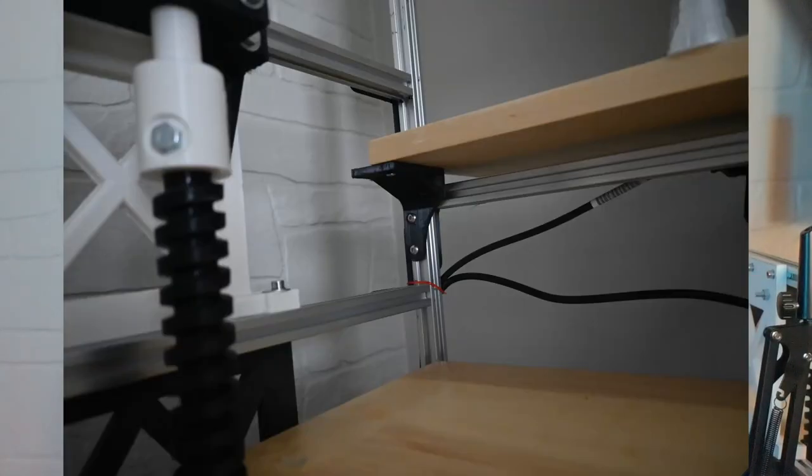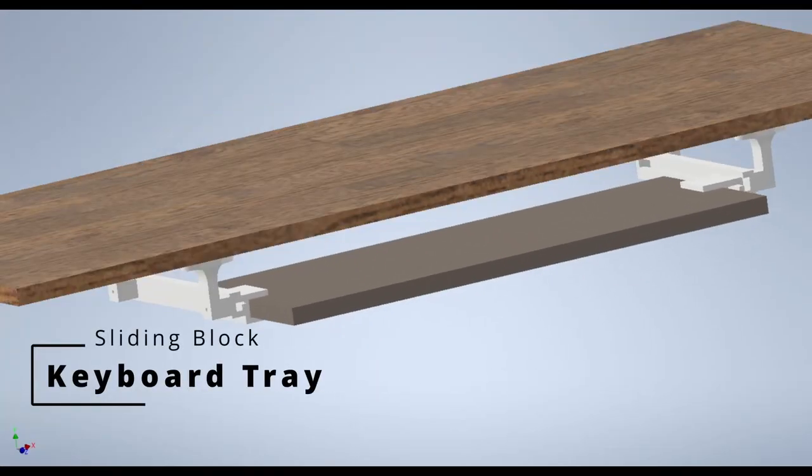It was way too wobbly at first, so I printed off two side supports that will help prevent the board from bending back and forth. Finally, I'm adding the keyboard tray for some extra distance away from the screen.